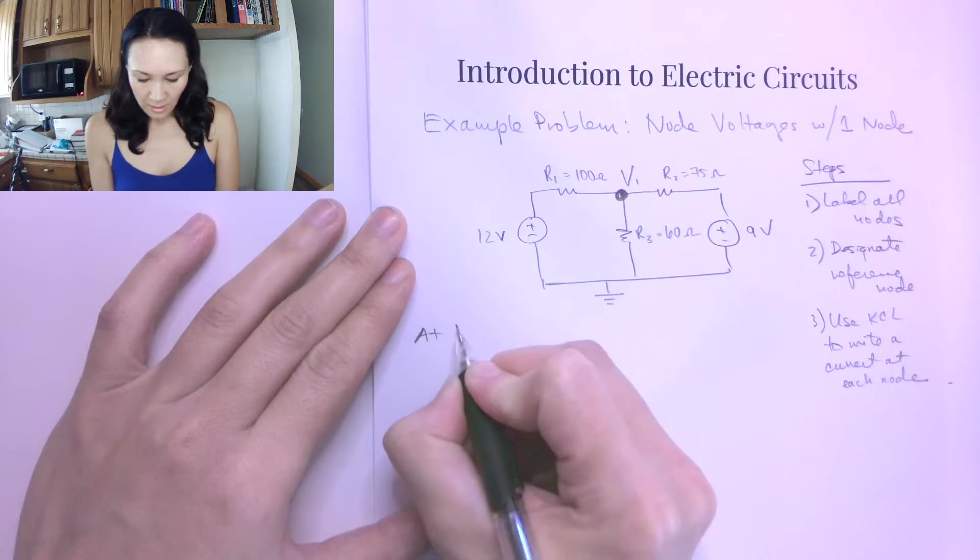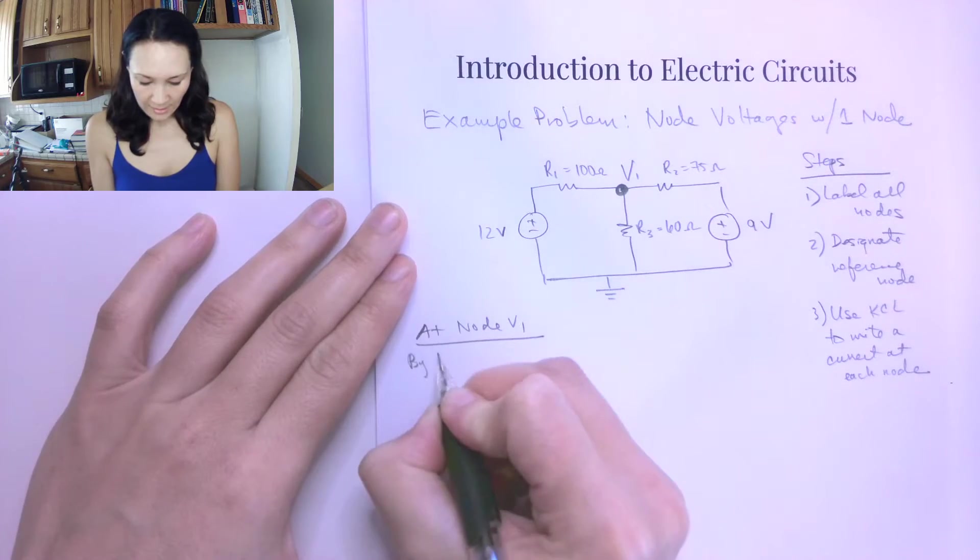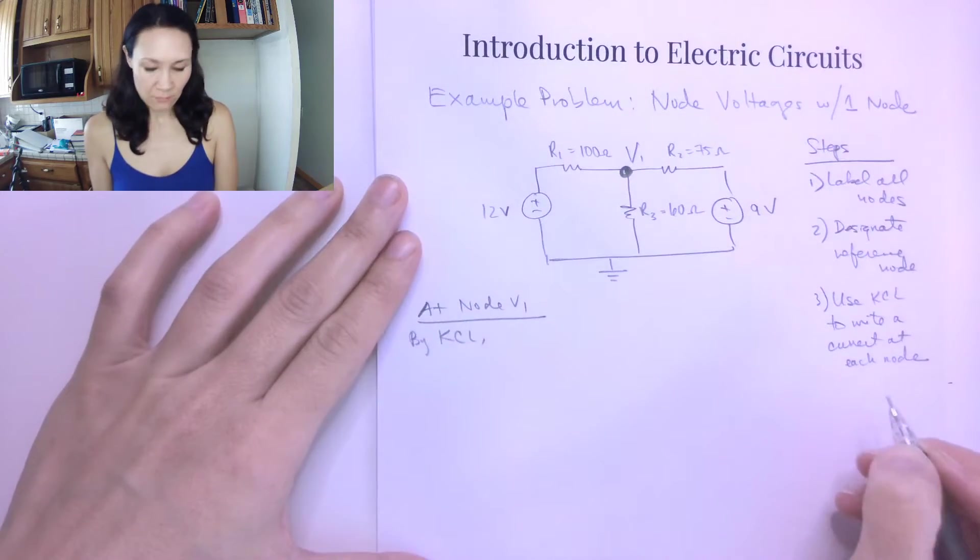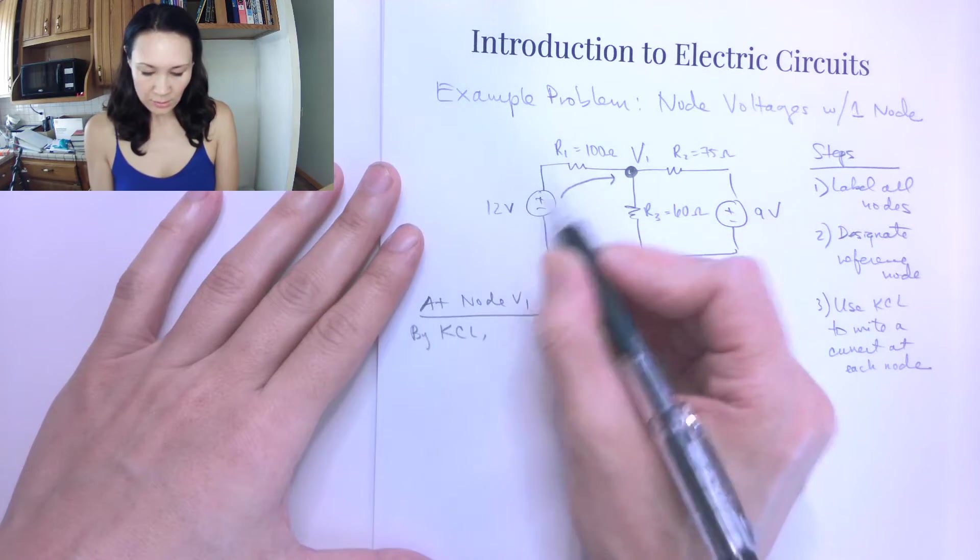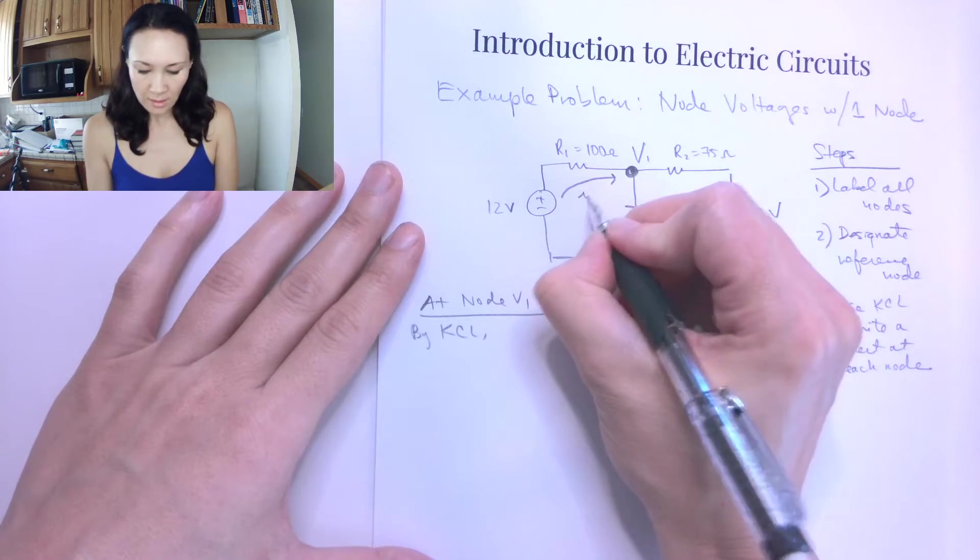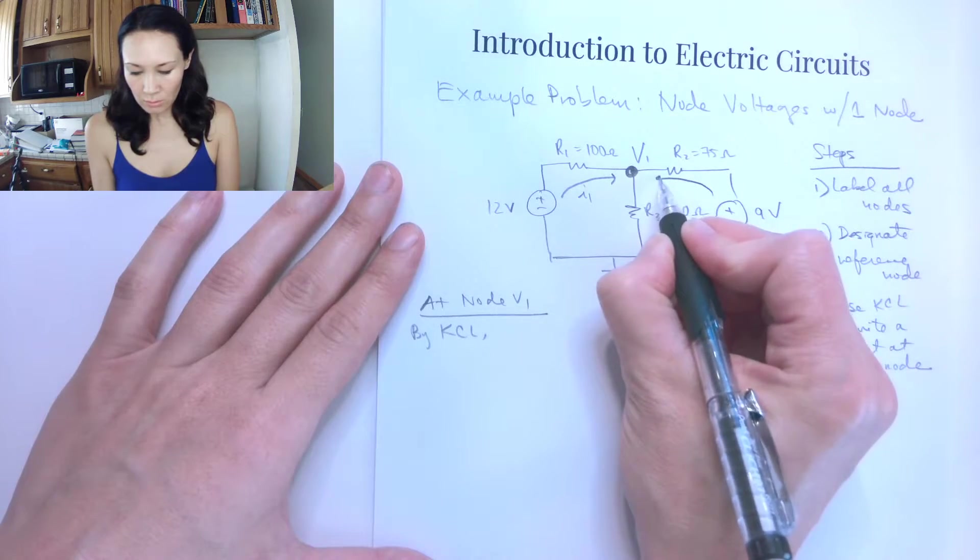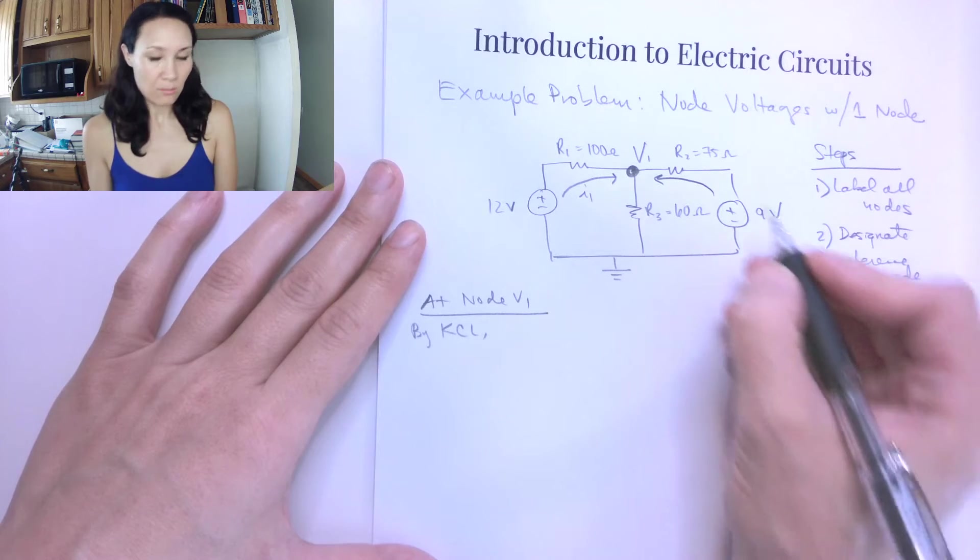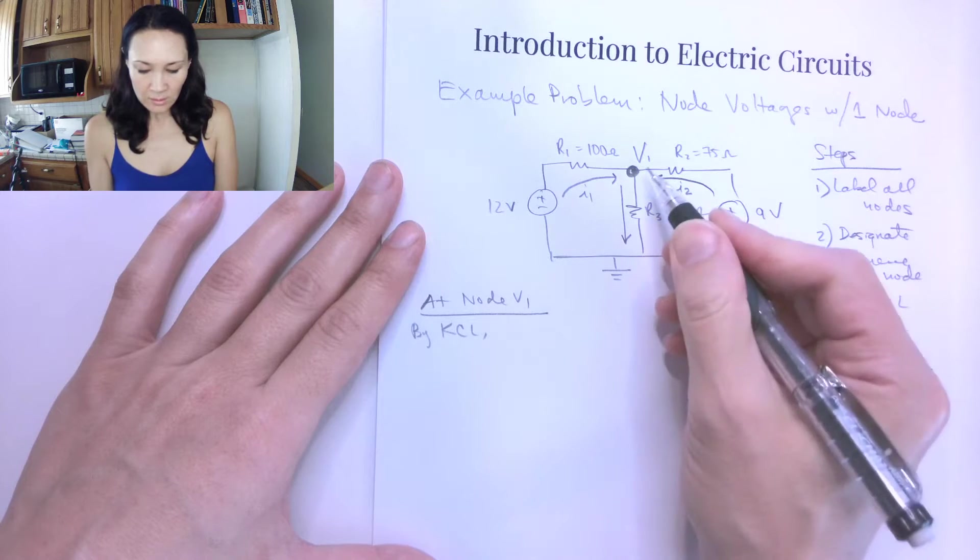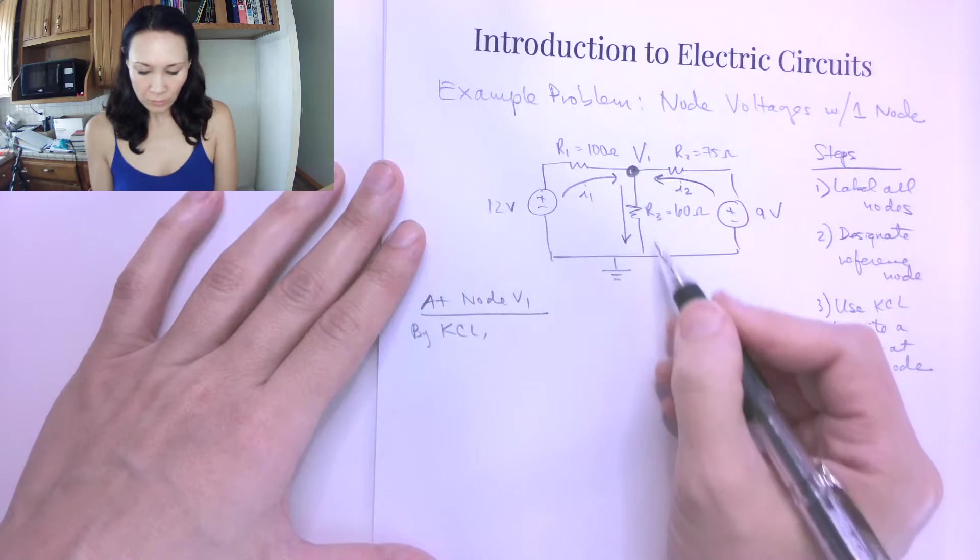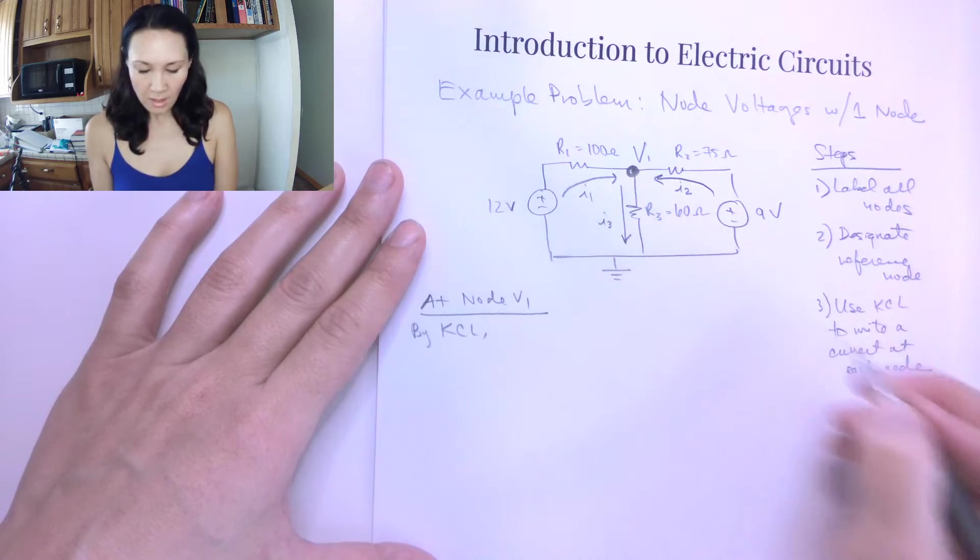So that means that at node V1 by KCL, we have that if I have a current coming in here that's generated by my 12 volt source, I'll label this I1. I'm going to have a current coming into the node this way that's generated by this 9 volt source, I'll label this I2. And then I'm going to have a current coming out that goes down through the R3 resistor, and I'll label this I3.